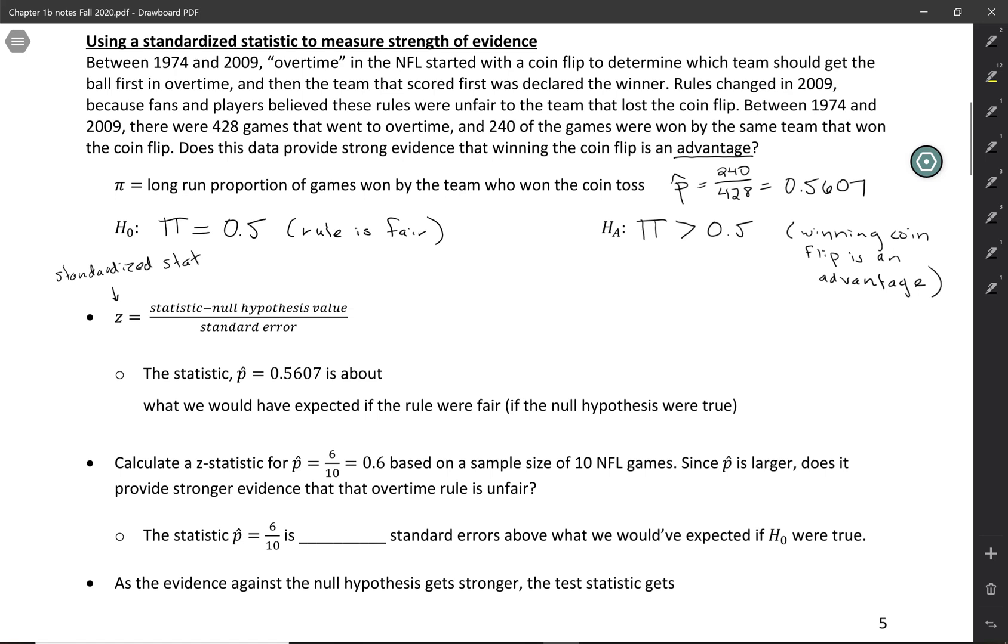To calculate a z-statistic, you start with your regular statistic, which in this case would be 0.5607—that's our sample proportion. Then you subtract the null hypothesis value. By doing this, we're really looking to see how far our statistic—the thing that really happened—is from what we would have expected if the rule were fair. The difference comes out to be 0.0607.